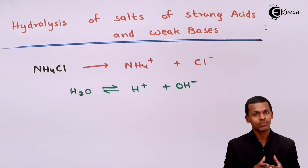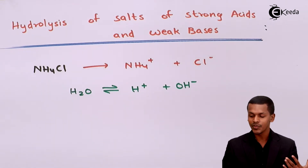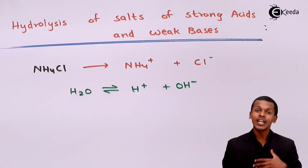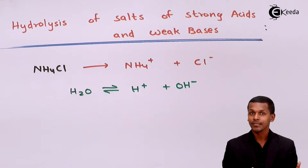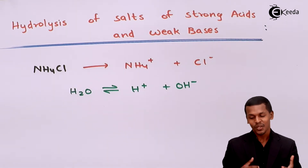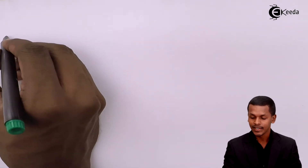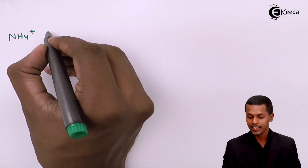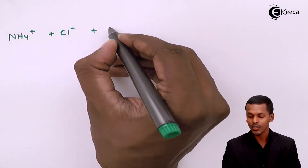Since HCl is a very strong acid, it will dissociate completely, so there will be no interaction between Cl- and H+. Instead, there is a strong interaction between NH4+ and OH-, which affects the concentration of OH- and increases the concentration of H+. We are taking the salt NH4Cl, which dissociates into NH4+ and Cl-, and reacts with H2O.